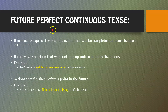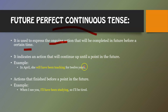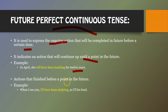Future perfect continuous tense is used to express an ongoing action that will be completed in the future before a certain time. It indicates an action that will continue up until a point in the future. For example, 'In April, she will have been teaching for 12 years.' It also covers actions that finished just before a point in the future — for example, 'When I see you, I will have been studying, so I will be tired.'